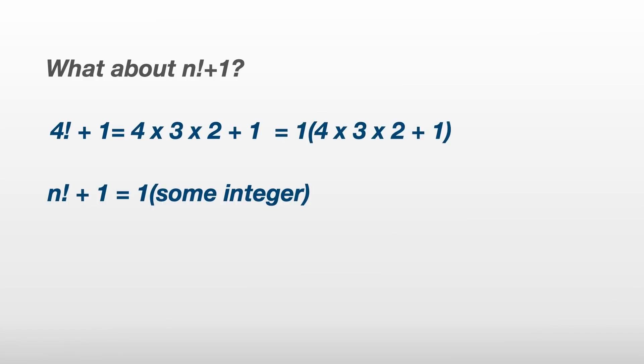Now, you might have noticed that we skipped 4 factorial plus 1. Well, since any n factorial plus 1 can be factored into some integer times 1, the fact that there's a factor of 1 doesn't help determine whether this sum is prime or not, since any integer, prime or not prime, can be divided by 1.